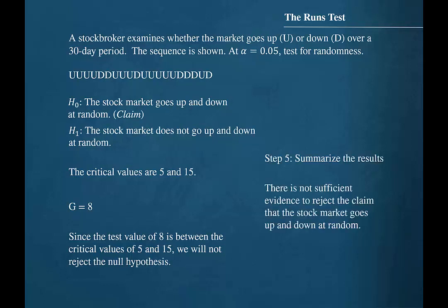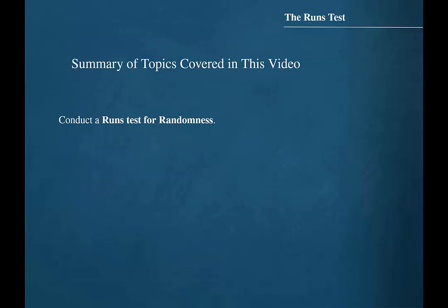Step 5 is to summarize the results. Since we are not going to reject the null hypothesis, our conclusion should be that there is not sufficient evidence to reject the claim that the stock market goes up and down at random. In this video, we learned how to conduct a runs test for randomness.